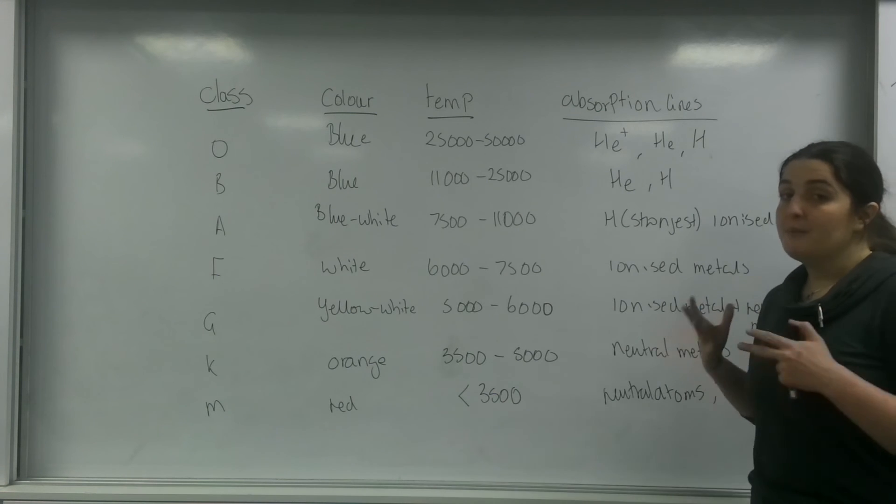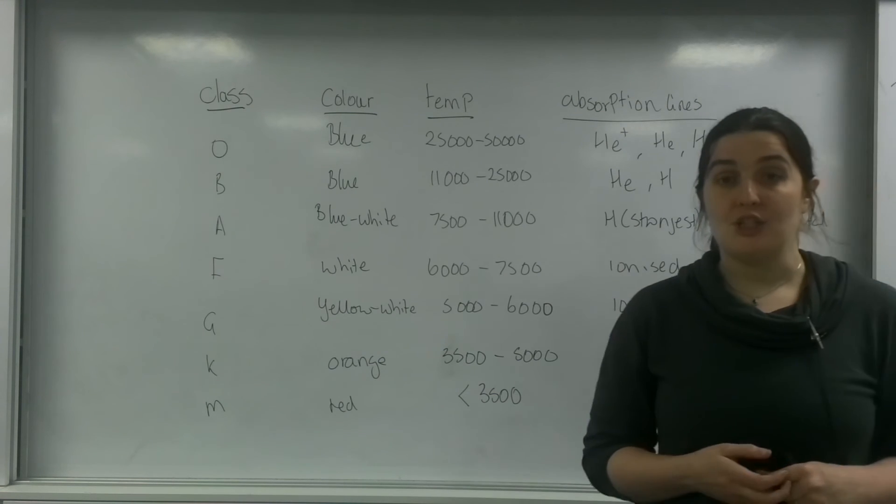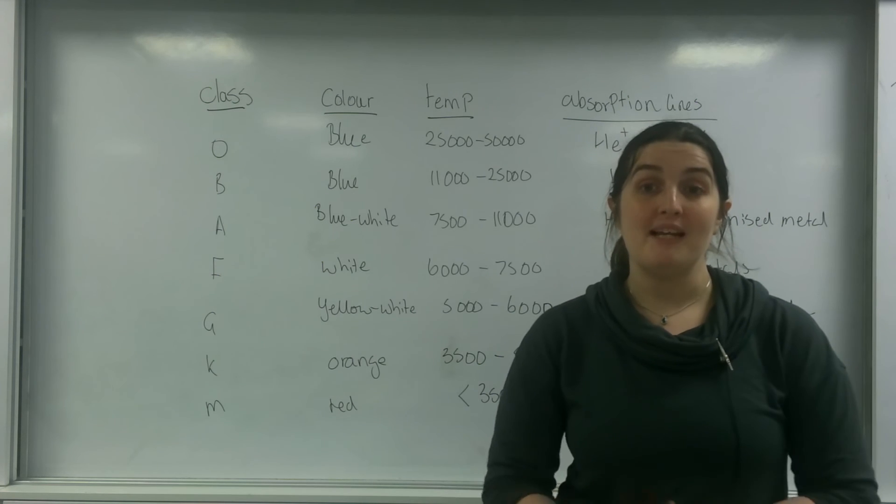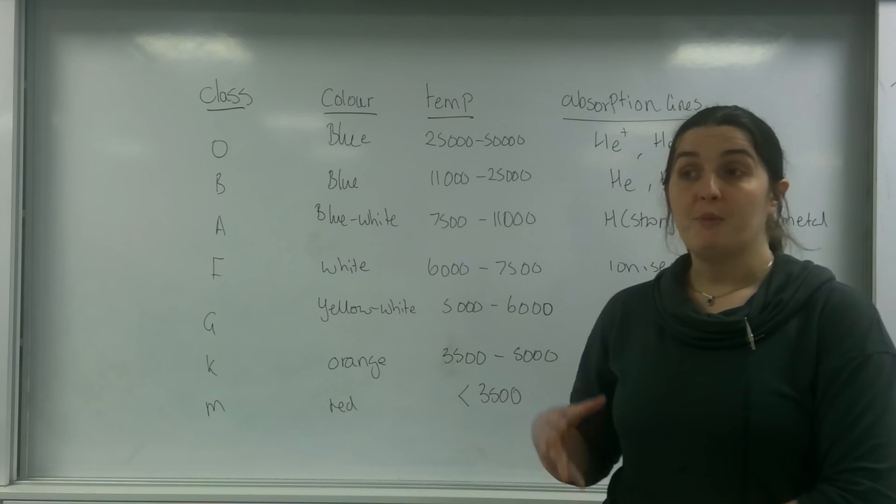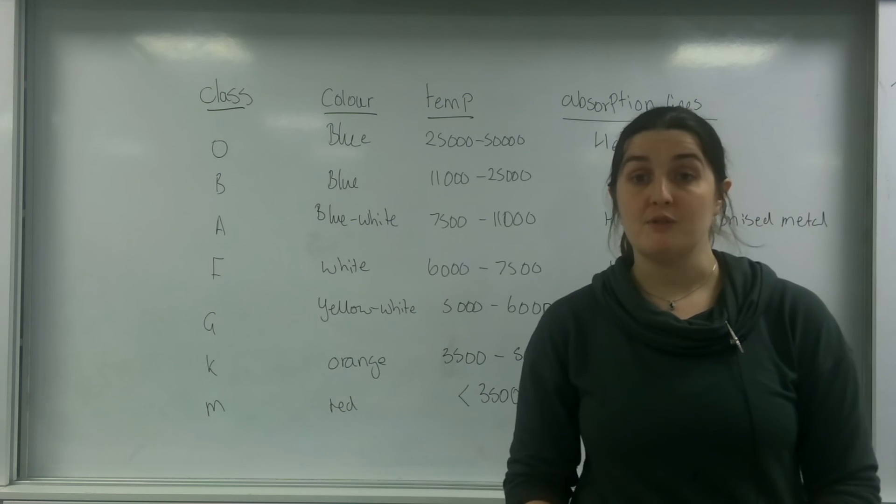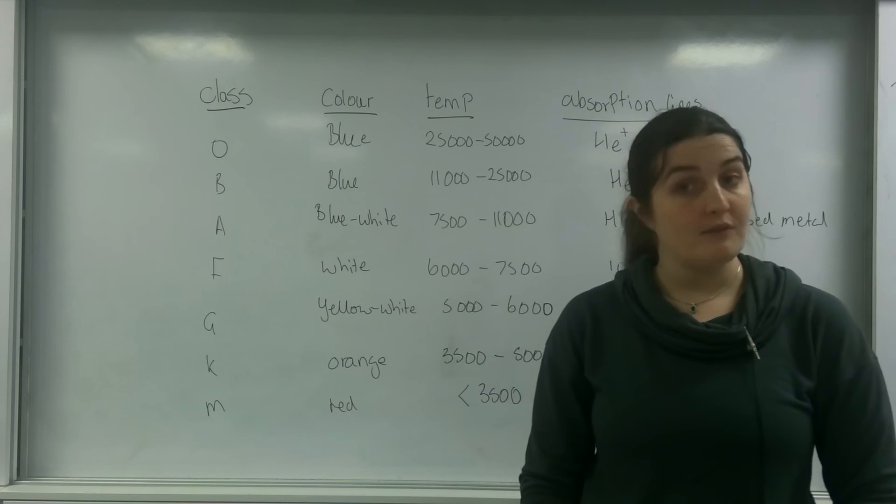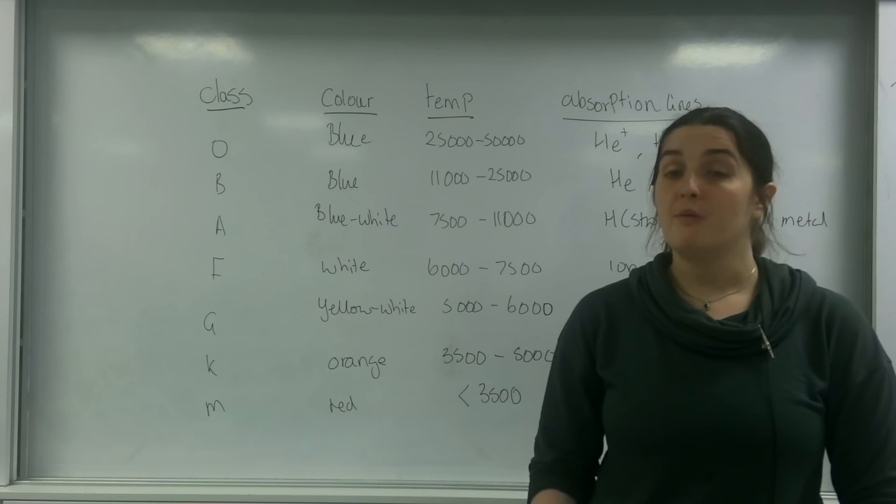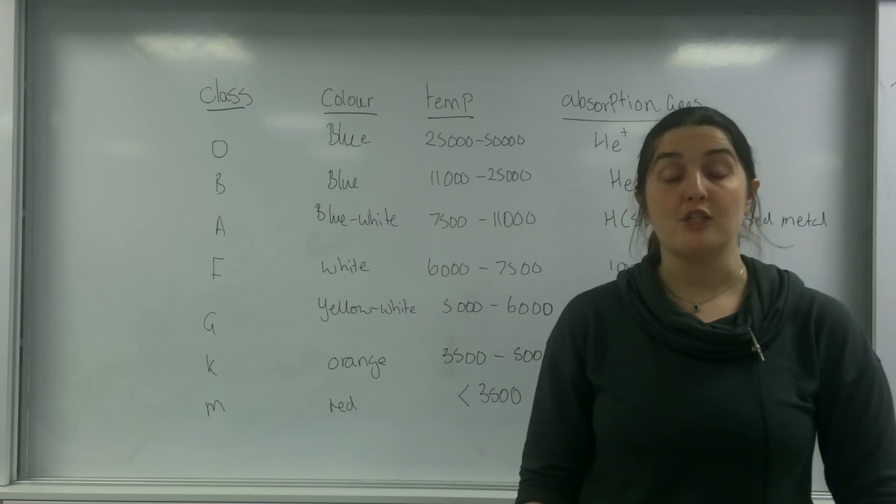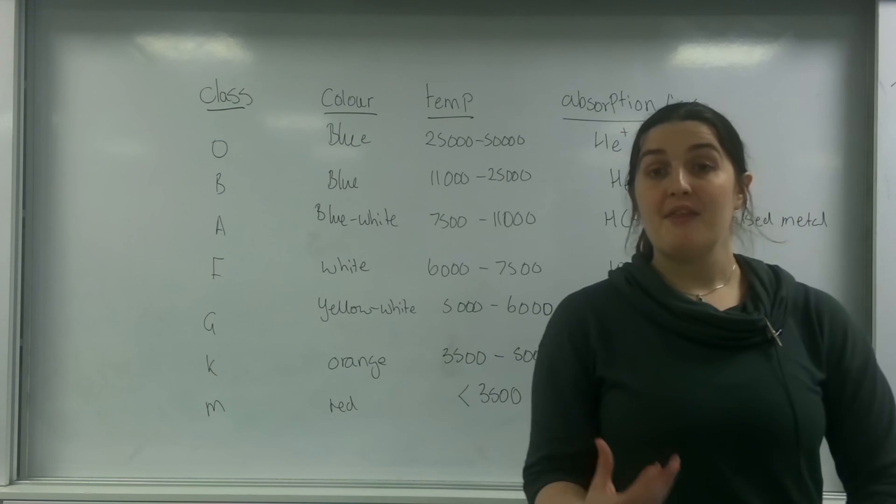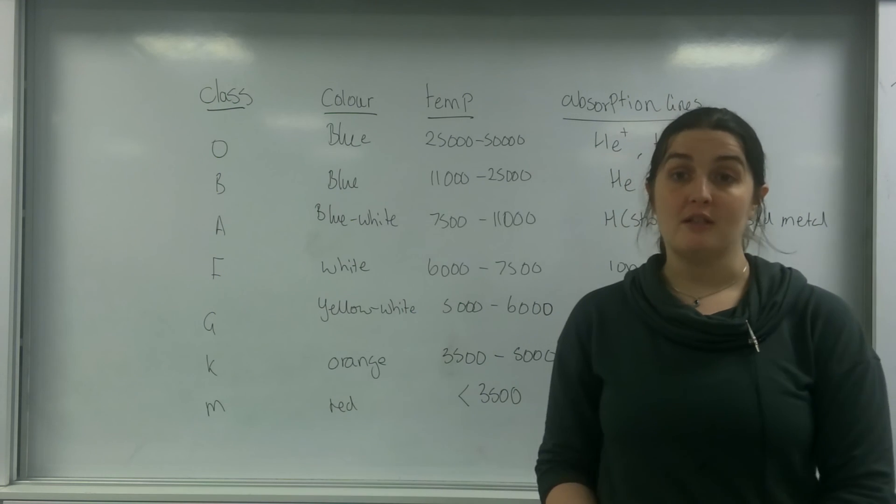This is the basis of the classification of stars, and you can use this information later on to determine properties of stars. It is important that you know this because the exam board will never give it to you and they will assume that you know what the temperature range of a class B star is. So that is the classification of stars table.